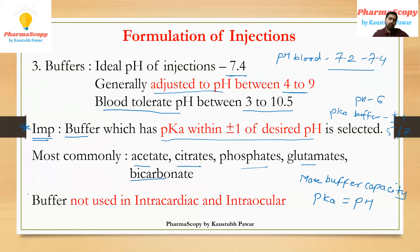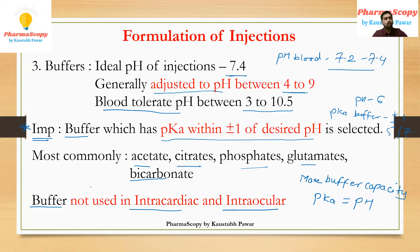An important point from your GPAT perspective: buffers are not used in intracardiac and intraocular parenteral dosage forms. In all other parenteral dosage forms buffers can be used, but in intracardiac and intraocular routes, buffers cannot be used.